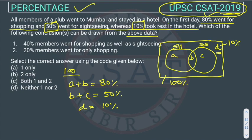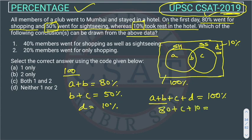We have to calculate the values of A, B, and C. D we already know, and the total is 100%. So A plus B plus C plus D equals 100%. A plus B is 80%, and D is 10%, so C equals 100% minus 90%, which gives C equal to 10%.